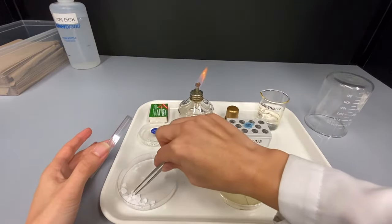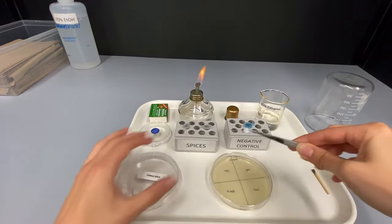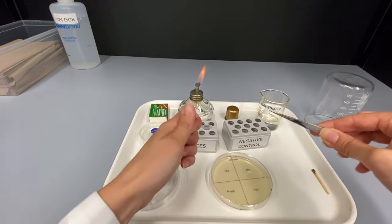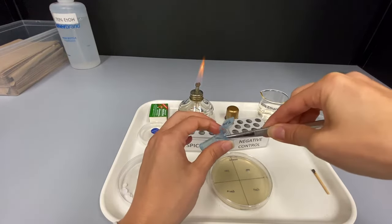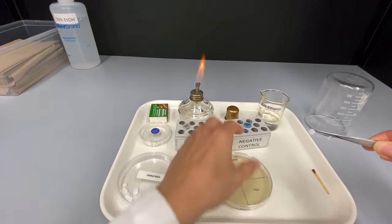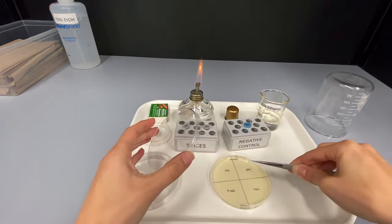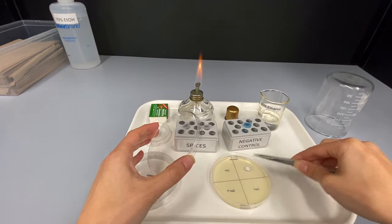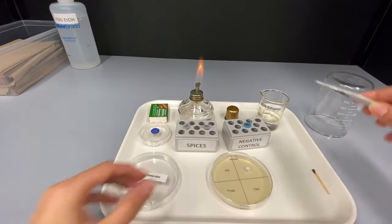Pick up a blank disc with the forceps and hold it in the sterile water, leaving it for approximately 10 seconds. This will be your negative control disc. Lift the lid of your plate, place the disc in the center of the negative control section of your plate and then close the lid.